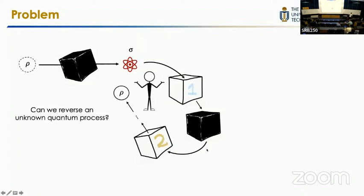For this unknown process, it can be, for example, a magnetic field in some space, so your state just suddenly passed through it. Or it can be some unknown noise in your quantum hardware. Or it can be a quantum device given by one of your colleagues from some experiment group.